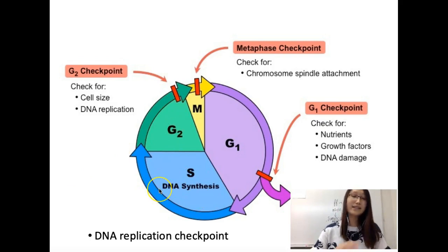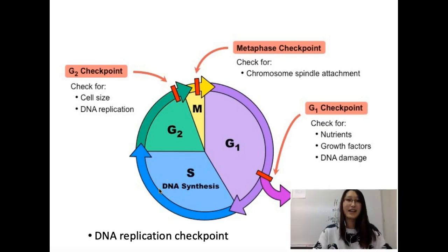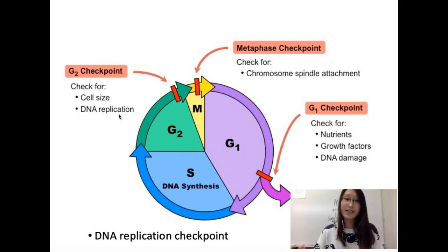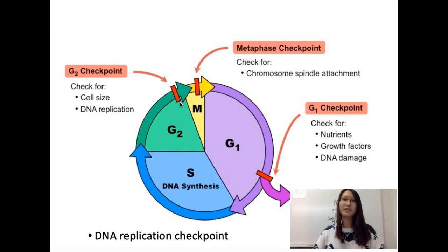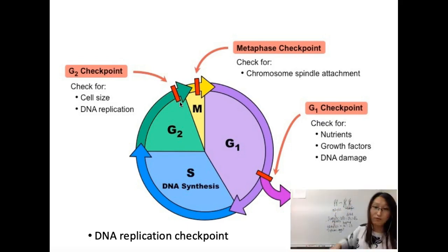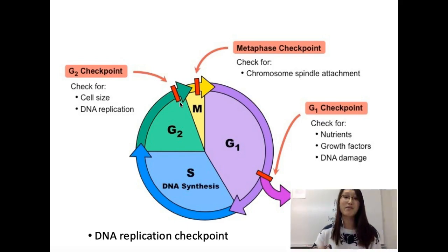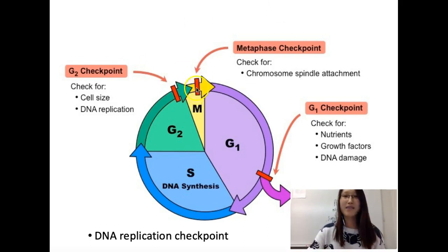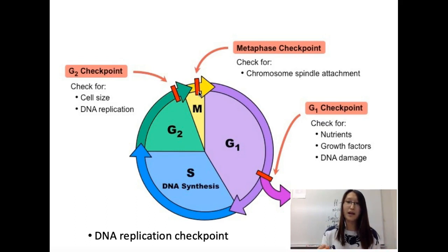Once DNA is completely duplicated — one DNA becomes two attached in an X shape — we move to G2 phase to prepare for cell division even more. The G2 checkpoint verifies: no DNA damage, the cell is big enough, and DNA is replicated correctly. If one DNA strand didn't replicate, we can't divide. The M phase checkpoint checks that spindle fibers are attached to the sister chromatids correctly.